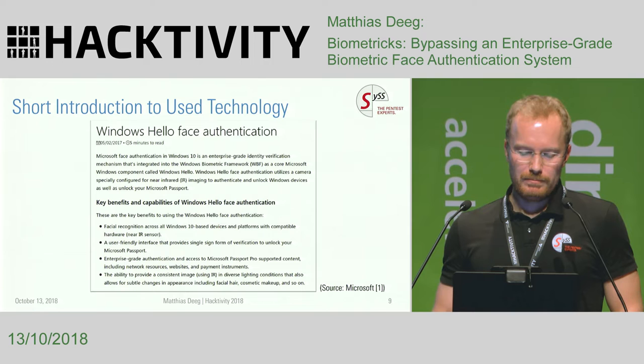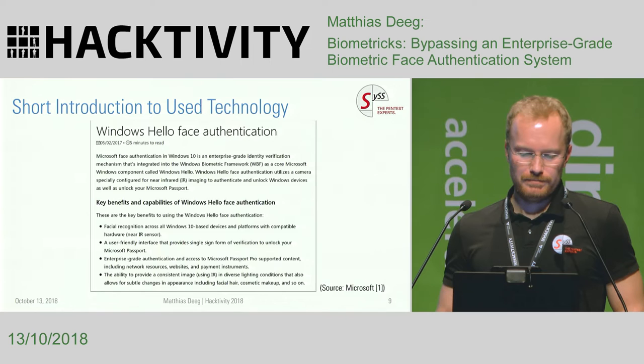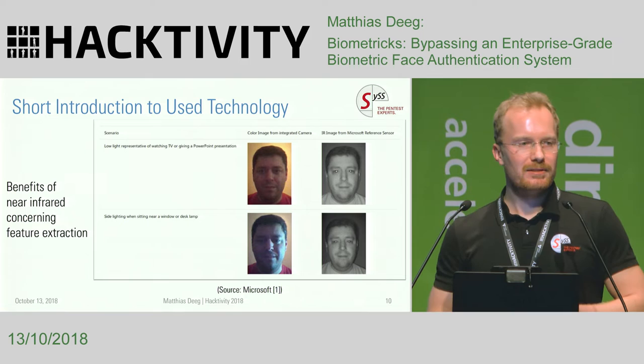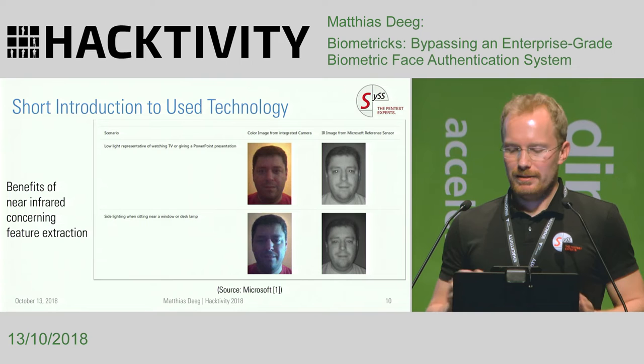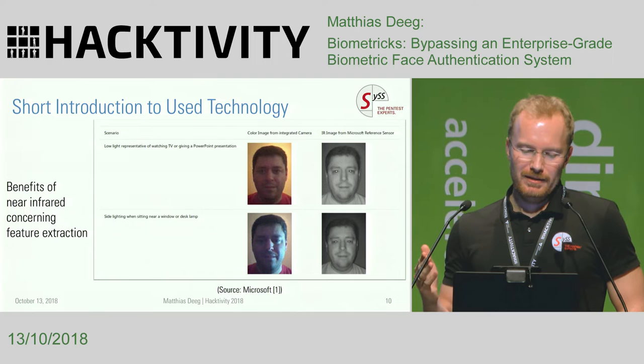One of the key benefits of using infrared instead of visible light is the ability to provide consistent imaging even with different lighting conditions. With an IR camera, you can get a decent image where you can recognize facial features quite well, independent of the visible lighting in the room. That's why biometric face authentication systems currently typically use near-infrared.